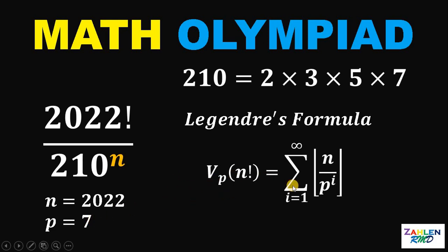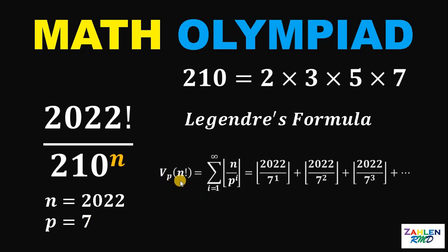Let's apply this formula. So you have v sub p of n factorial equals the floor value of 2022 over 7 raised to 1 plus the floor value of 2022 over 7 squared plus the floor value of 2022 over 7 cubed and so on and so forth. Notice that I stop at this point because the next term must be 0.